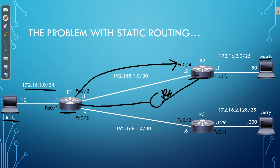Let's say that link goes down. R1 still has that static route because it's static — it doesn't change. Even though this link has gone down, R1 will still try to follow that static route and forward traffic over the failed link. That traffic is just going to be dropped because the interface is down. We would have to, as network engineers, come in and manually change the static route on R1, telling it that if you want to forward traffic to Morty, you now have to go over the alternative link because your primary link is down.